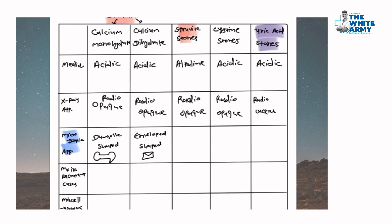Struvite stones appear like a coffin lid shape. Cystine stones appear hexagonal, like a diamond shape. Uric acid stones vary in appearance — rhomboid shape, among others, as it is not very specific.